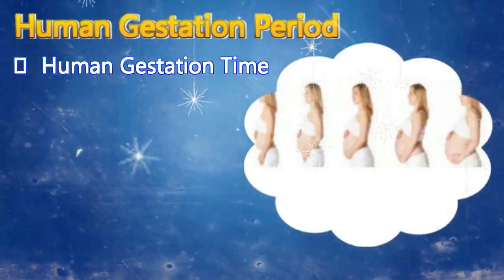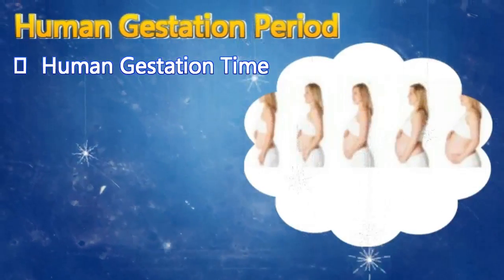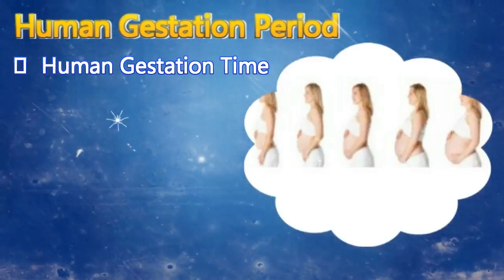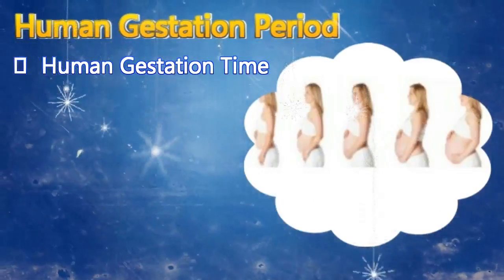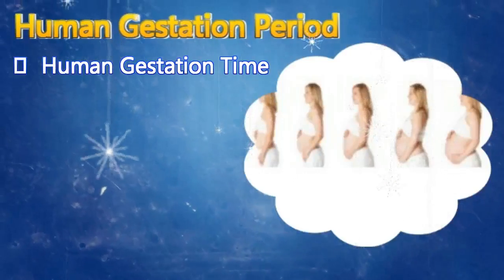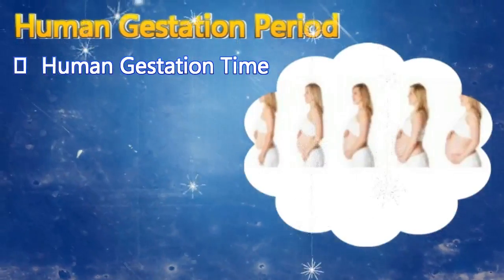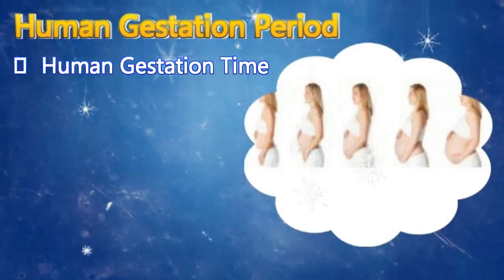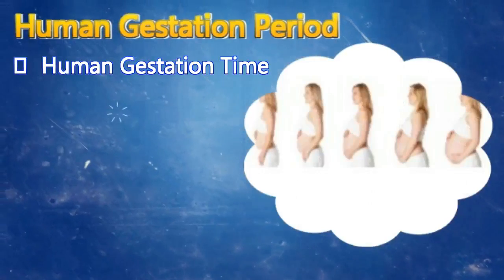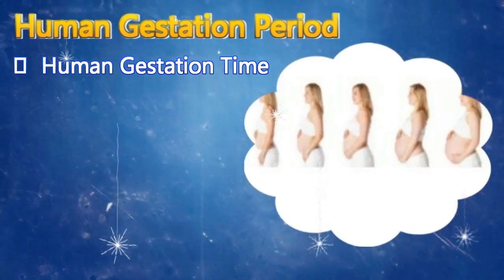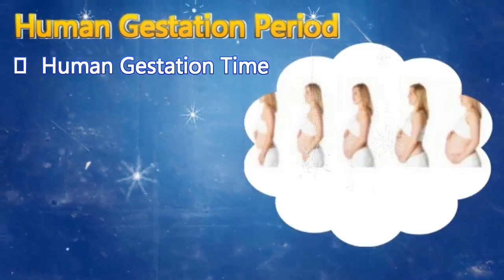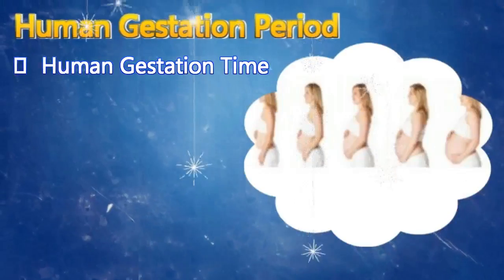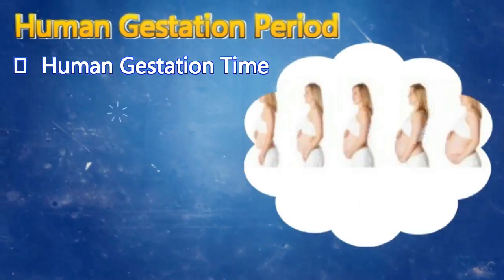Another way of determining the gestation period is by using pregnancy ultrasound. This is done by applying a conductive jelly on the woman's belly, and the sound waves are captured with the help of a transducer which is moved around the stomach. The sound waves present in the abdomen are transferred into a monitor as a two-dimensional picture. Through this picture, not only can the growth of the baby be monitored, but the doctor can also determine the gestational age. Pregnancy ultrasound is not only used for knowing the gestational period but also to check fetal health problems, ectopic pregnancy, multiple pregnancy, and more.